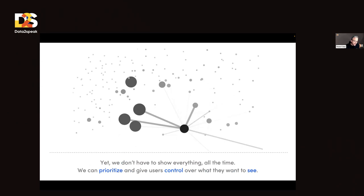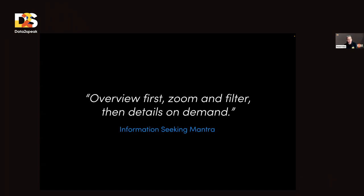Yet we don't have to show everything all the time. When we can prioritize and give users control over what they want to see, this is a much desired path. This takes me back to the beautiful information-seeking mantra by Ben Shneiderman: provide an overview first, then zoom and filter, and then details on demand. This was very much the principle we carried through a lot of the work we ventured on.